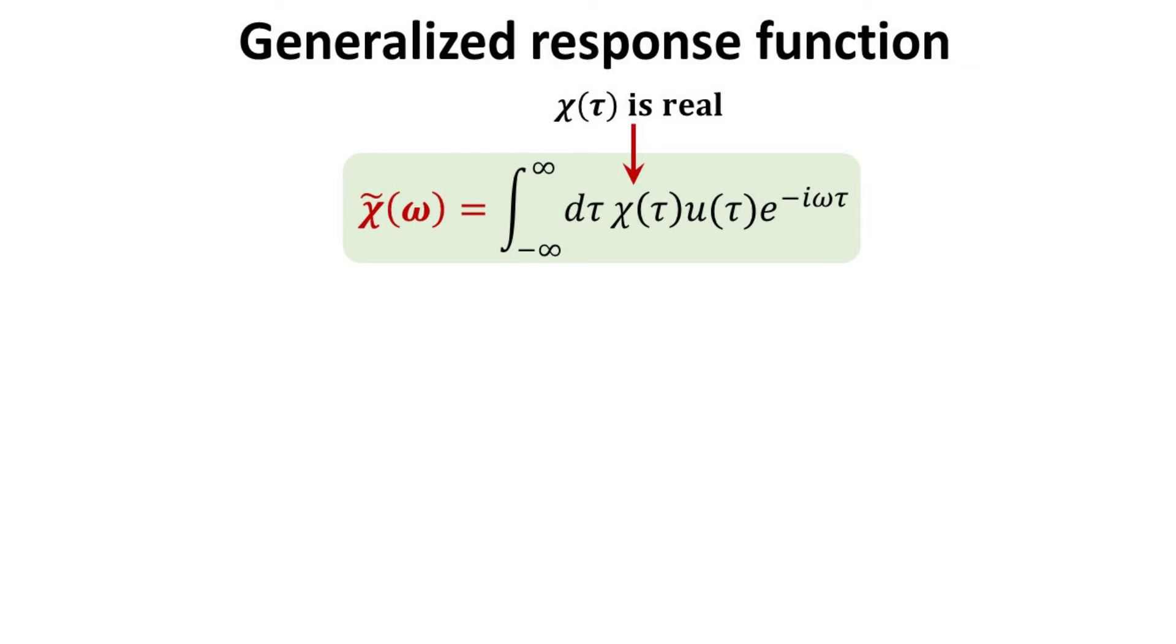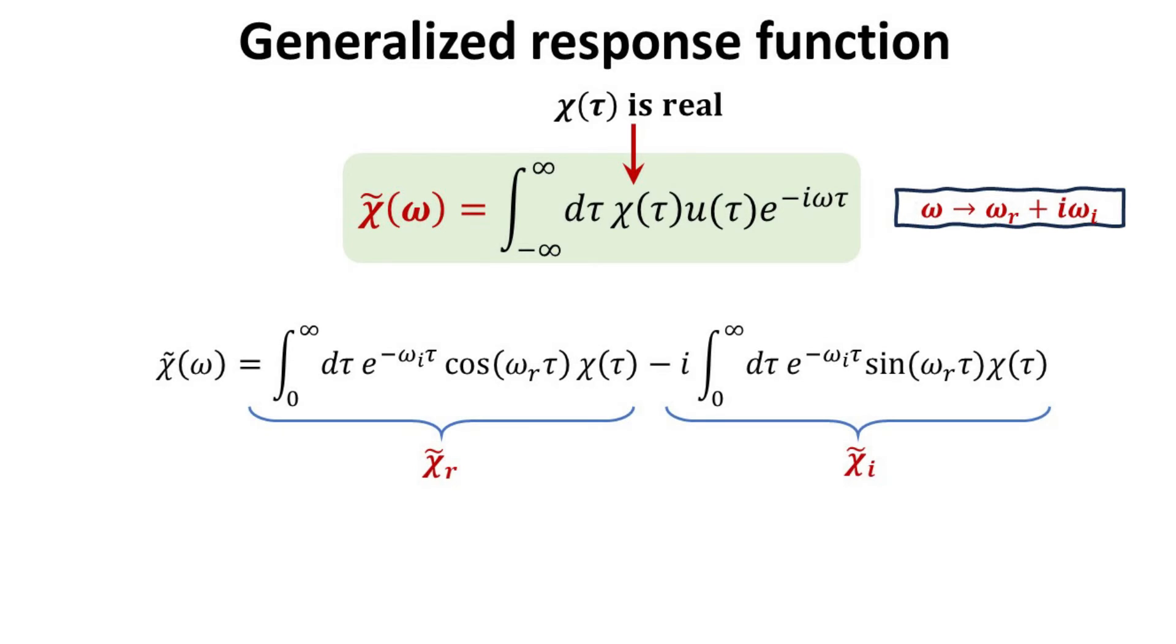Some remarks about the generalized response function are in order. First, we note that chi has to be real since it describes the impulse response of a real physical system. Here, we shall let omega be complex, where omega r and omega i denote the real and imaginary part respectively. We can then expand the complex exponential function in terms of its sine and cosine terms as shown.